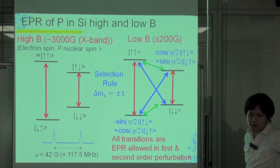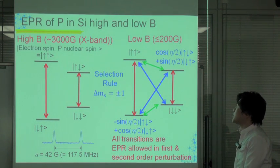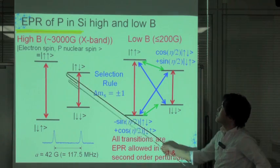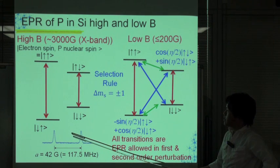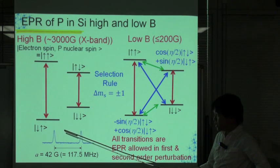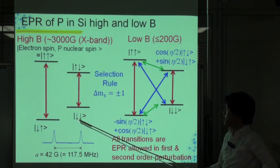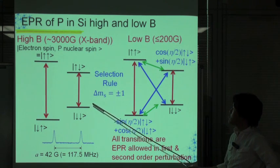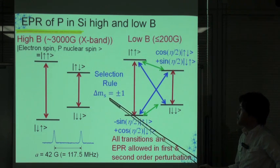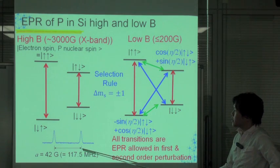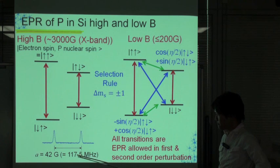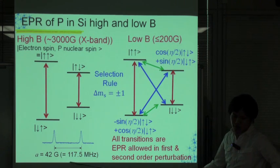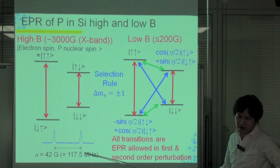At high magnetic field, the spin states become simple: |↑↑⟩, |↑↓⟩, |↓↓⟩, and |↓↑⟩. In this region, the EPR transitions are limited to two, indicated by red, because of the selection rules described by these equations. This figure shows the EPR spectrum of phosphorus in silicon under 3000 Gauss. The two allowed transitions are separated by 42 Gauss, corresponding to the strength of the hyperfine interaction.